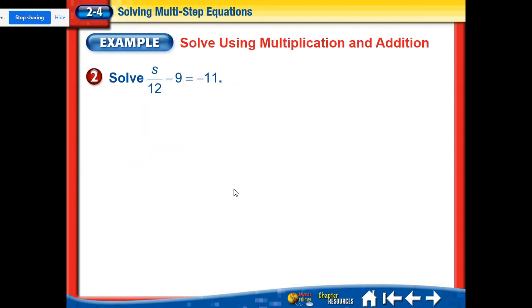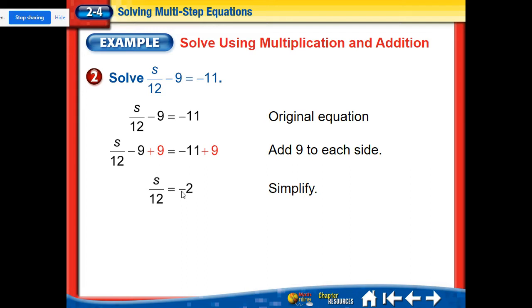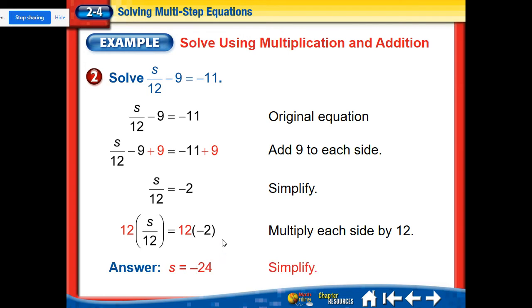Moving on to another one. s divided by 12 minus 9. Notice this divided by 12 is just on the s. That's important. So we're still going to get rid of this minus 9 first. So the opposite of minus 9 is plus 9. So we're going to do that plus 9 to both sides. So negative 11 plus 9 is going to give us negative 2. And so it's s over 12 equals negative 2. And then we're going to multiply by 12 because that's a divide. So the opposite is multiply. So we're going to multiply by 12 and s equals negative 24.